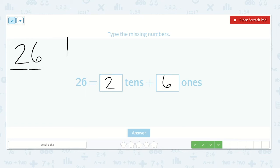So let's draw a picture for it. Twenty-six, we said, is two tens and six ones. Let's count them. Ten, twenty, twenty-one, twenty-two, twenty-three, twenty-four, twenty-five, twenty-six. Yes! Twenty-six is equal to two tens and six ones.